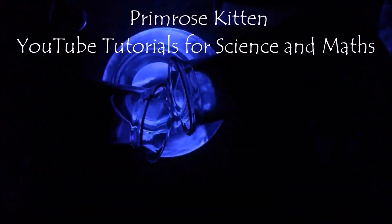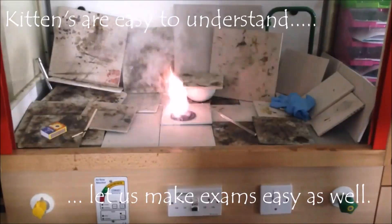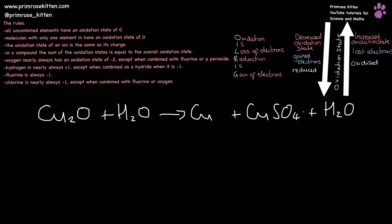Disproportionation is such a good word and the equation is pretty cool, so here are loads of examples for you. When working out a disproportionation reaction we need to start by listing the oxidation states of absolutely everything. If you're not sure how to do this, or if you're not sure what redox is, I suggest you go and watch the videos on that first.